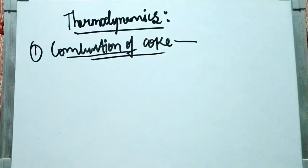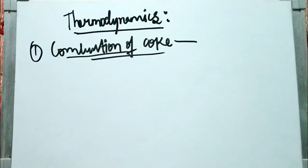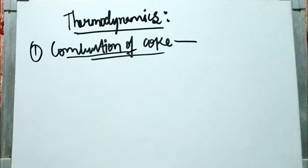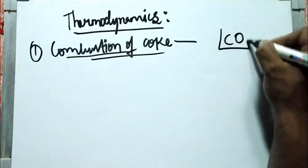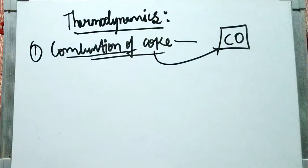Today let's discuss about the combustion of coke. Coke is one of the raw materials which is the principal source of carbon — coke is essentially carbon itself. It is the principal source of carbon as well as the principal reducing agent. The indirect reduction is nothing but the reduction of iron ore using carbon monoxide gas, and this CO comes from the coke — that is, from the combustion of coke.